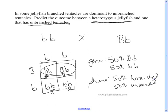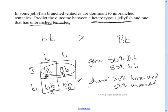Does that mean they're going to have four babies — two branched and two unbranched? No. It just means no matter how many babies they have, there's a 50% chance of having a branched baby and a 50% chance of having an unbranched baby.